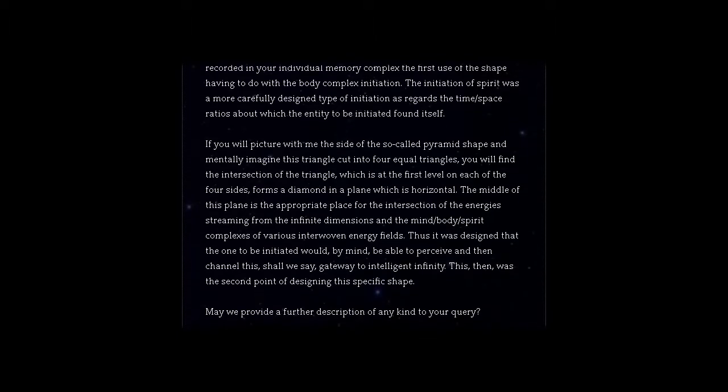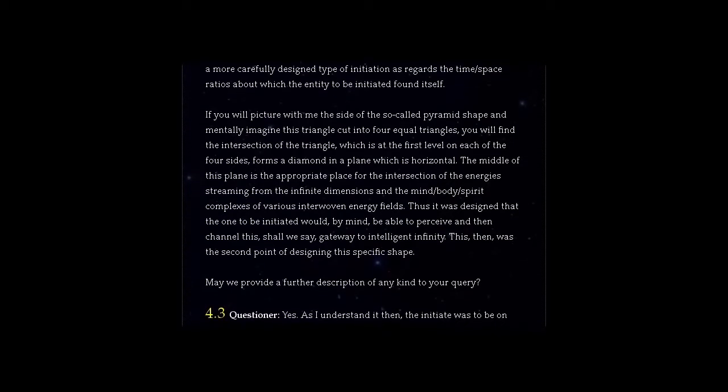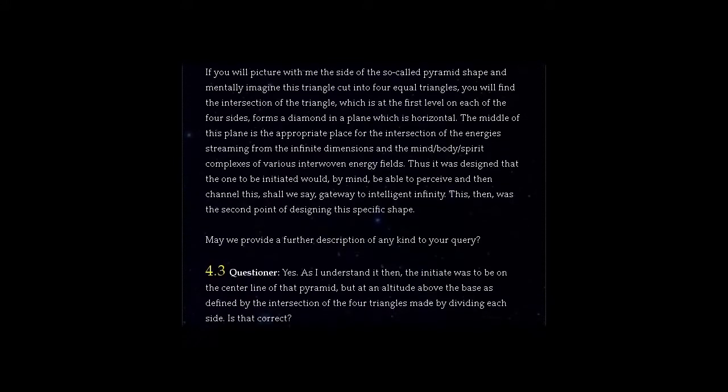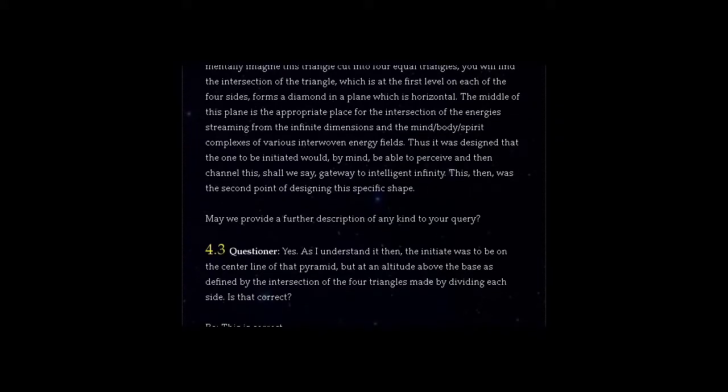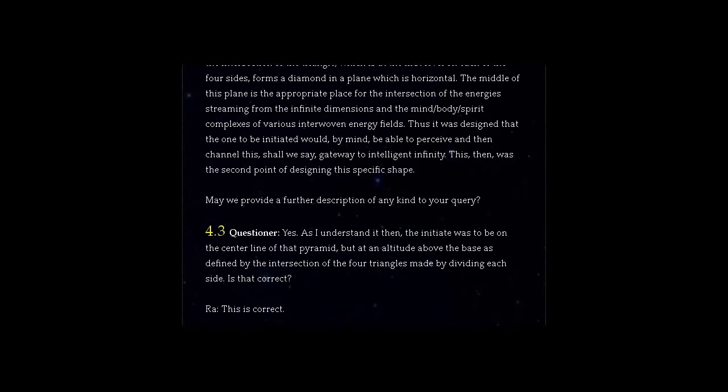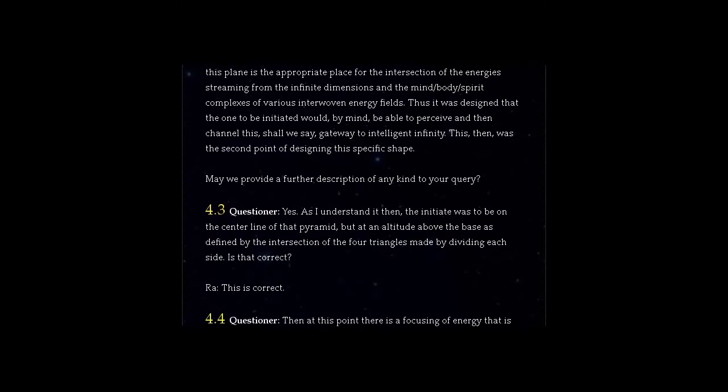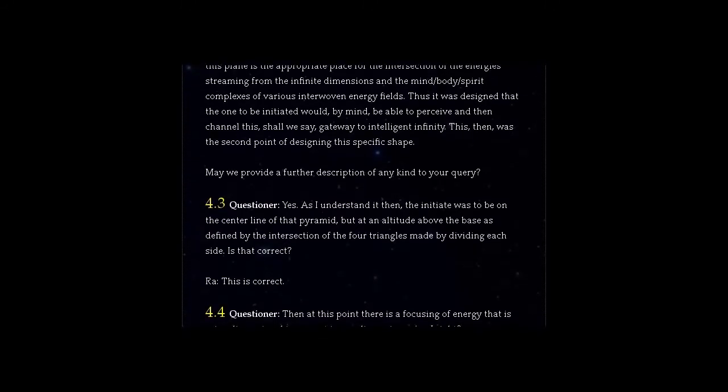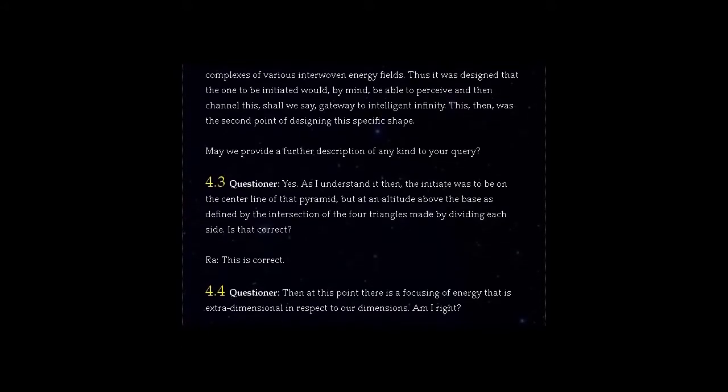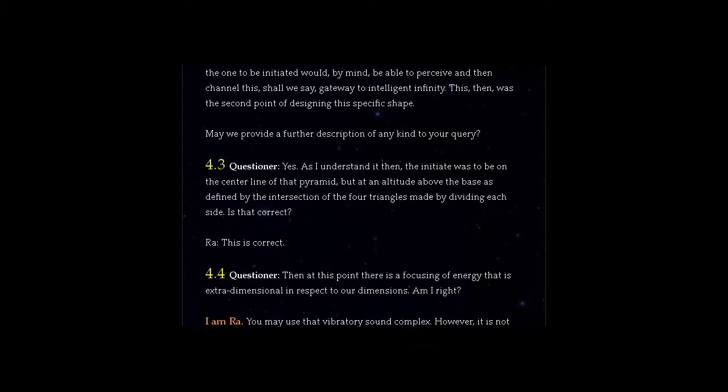If you will picture with me the side of the so-called pyramid shape and mentally imagine this triangle cut into four equal triangles, you will find the intersection of the triangle, which is at the first level on each of the four sides, forms a diamond in a plane which is horizontal. The middle of this plane is the appropriate place for the intersection of the energies streaming from the infinite dimensions and the mind, body, spirit complexes of various interwoven energy fields. Thus it was designed that the one to be initiated would, by mind, be able to perceive and then channel this gateway to intelligent infinity. This, then, was the second point of designing this specific shape.